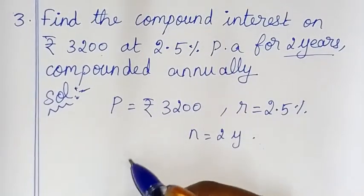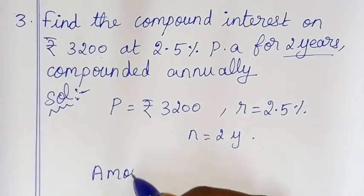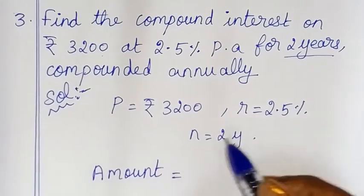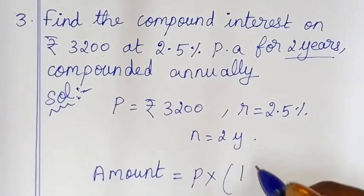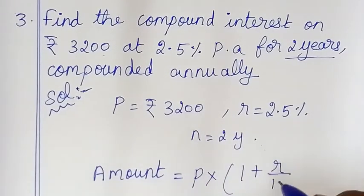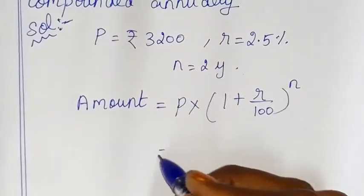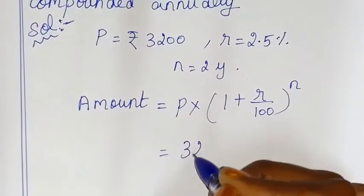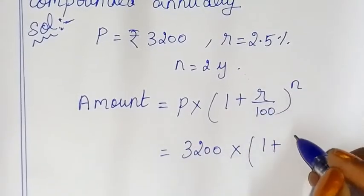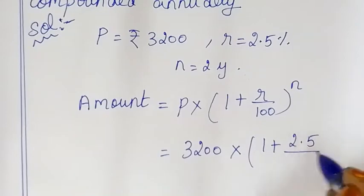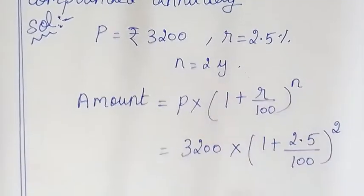Now we find the amount. The formula is: Amount is equal to P into 1 plus R by 100, the whole power N. So this is equal to 3200 into 1 plus 2.5 by 100, the whole power 2.